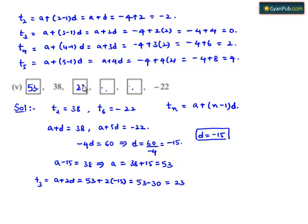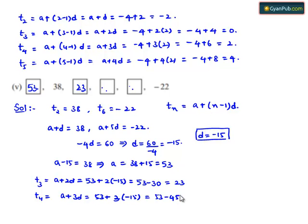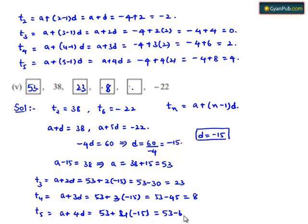T4 = a + 3d = 53 + 3×(-15) = 53 - 45 = 8. Therefore the third blank is 8. T5 = a + 4d = 53 + 4×(-15) = 53 - 60 = -7. Therefore the fourth blank is filled with -7.